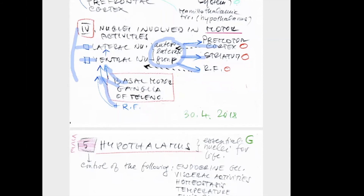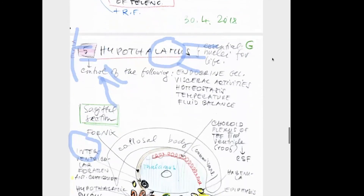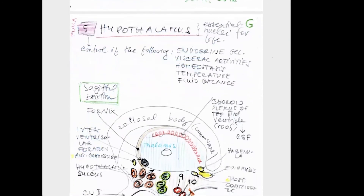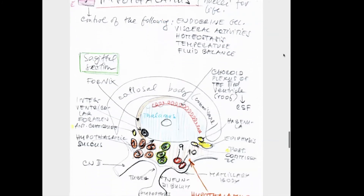Now we approach the hypothalamus — a relatively complicated part of the diencephalon. The hypothalamus contains essential nuclei for life. They control endocrine glands and their activities, visceral functions, homeostasis inside the body, temperature control, and fluid balance. That is why we underline that these nuclei are essential for our life.